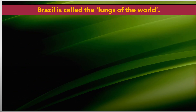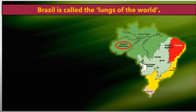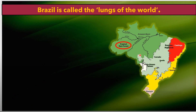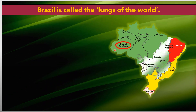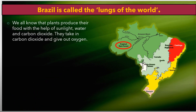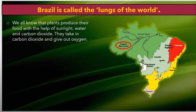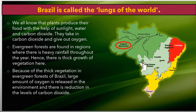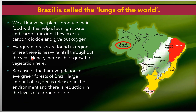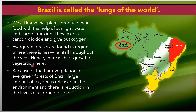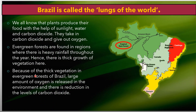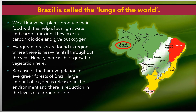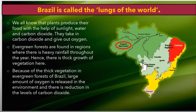Another give-reason question: why is Brazil called the lungs of the world? Looking at the map of Brazil, the tropical rainforest — shown in green — covers a vast area. Plants produce food using sunlight, water, and carbon dioxide; they take in carbon dioxide and give out oxygen. Evergreen forests in Brazil receive heavy rainfall throughout the year, resulting in thick vegetation. This thick vegetation releases large amounts of oxygen and reduces carbon dioxide levels — hence Brazil is called the lungs of the world.